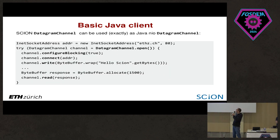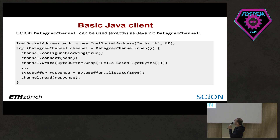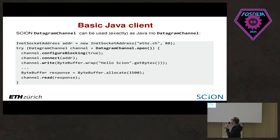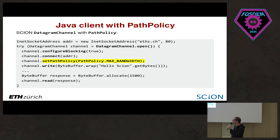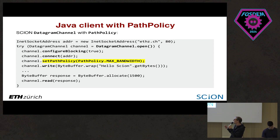Here is a basic Java client using DatagramChannel — it looks exactly like a normal DatagramChannel. One thing to bear in mind: the hostname, e.g. eth.ch, needs to be a SCION-enabled host, and your local machine needs to be connected to the SCION network. There is also a 'setPathPolicy' method: rather than manually going through all paths from your local AS, you can define a path policy — for instance, maximum bandwidth — and the channel will always try to find a path that suits that policy.